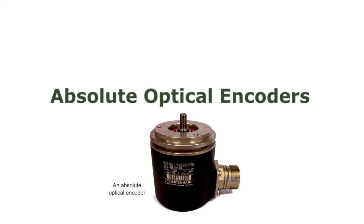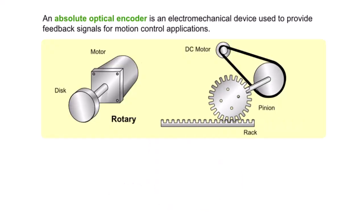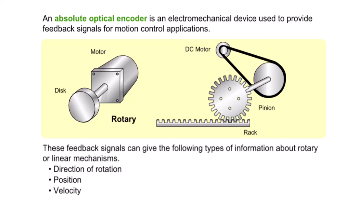Welcome to absolute optical encoders. An absolute optical encoder is an electromechanical device used to provide feedback signals for motion control applications. These feedback signals can give the following types of information about rotary or linear mechanisms: direction of rotation, position, and velocity.